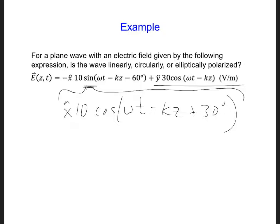Since the amplitudes of the two components are different, we have 10 and 30, and the phases are not equal. This is an elliptically polarized wave.